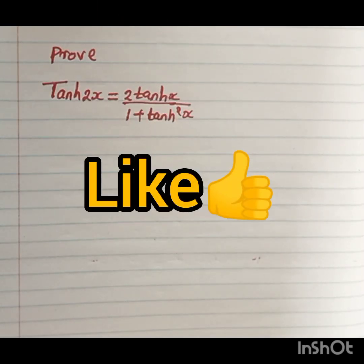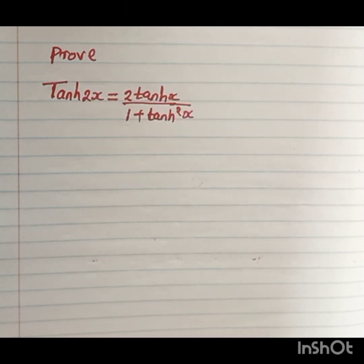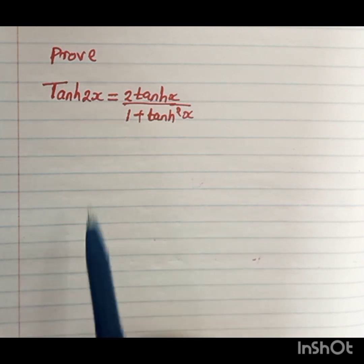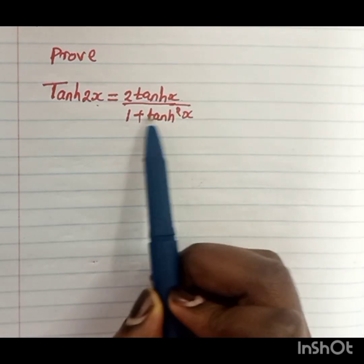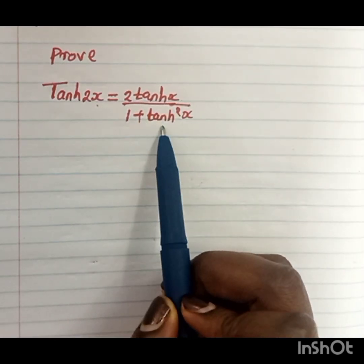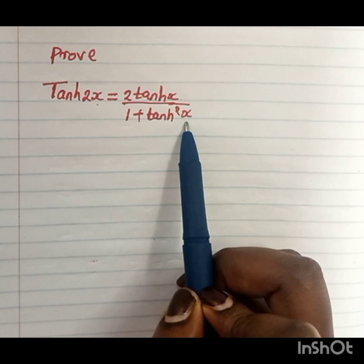Hello, welcome again to my channel. Let us continue revising for our exams. We are trying to prove that tanh 2x equals 2 tanh x over 1 plus tanh squared x. So how do we solve this?